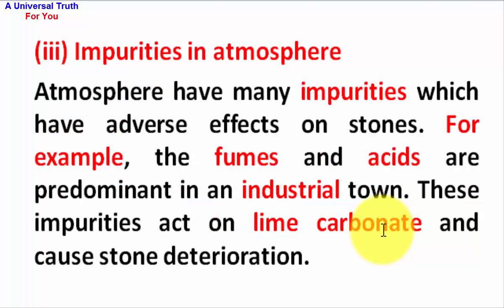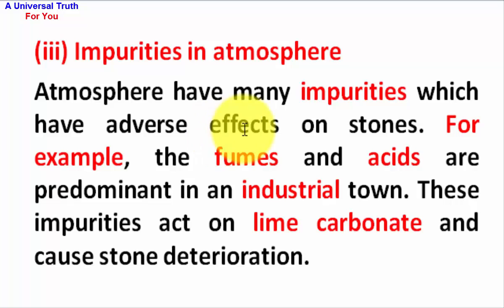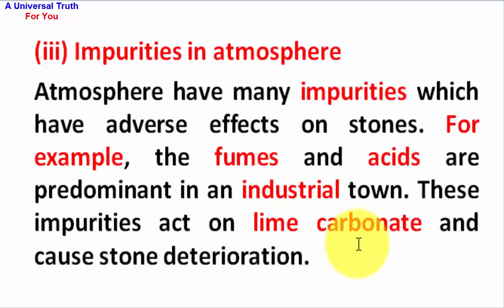Impurities in atmosphere: Atmospheres have many impurities which have adverse effects on stones. For example, fumes and acids are predominant in an industrial town. These impurities act on lime carbonate and cause stone deterioration.